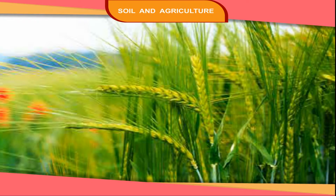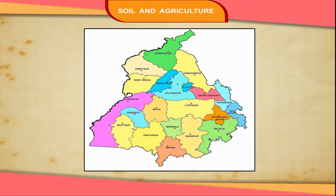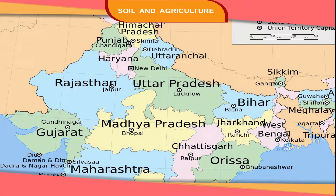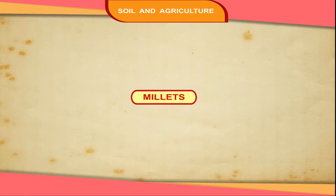Wheat is the main food crop of the people of northern and northwest India. It is mainly grown in Punjab, Haryana, Uttarakhand, Uttar Pradesh, Madhya Pradesh and Chhattisgarh.